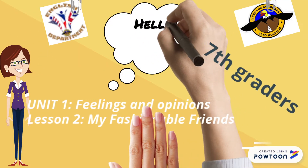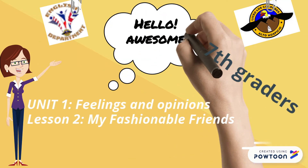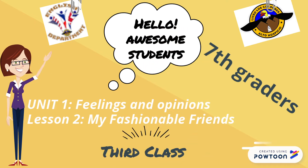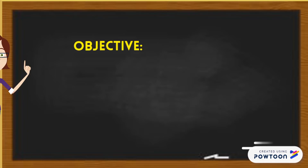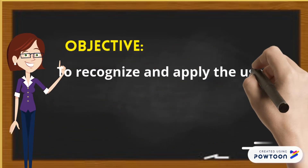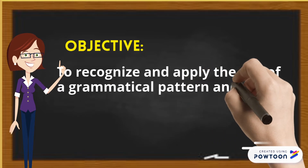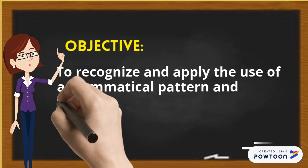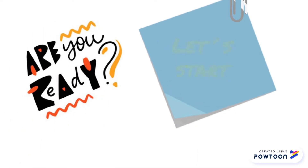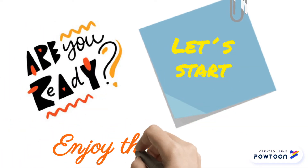Hi 7th graders! Welcome to class number 3, Unit 1, Lesson 2. Our objective: recognize and apply the use of a grammatical pattern and vocabulary related to clothes. Are you ready? Enjoy this lesson and let's start!